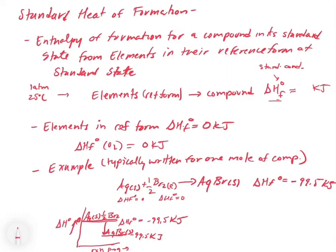You can write this for any reaction and set it up the same way. If you look up Appendix C in the textbook, you'll find a whole range of standard heats of formation for all different compounds. The number you're looking up is the amount of heat energy either added or released when you take the elements in their reference form and make the compound under standard conditions. In the next video, we'll use these standard heats of formation to figure out a delta H for a reaction, because all of these are referenced to the same zero.